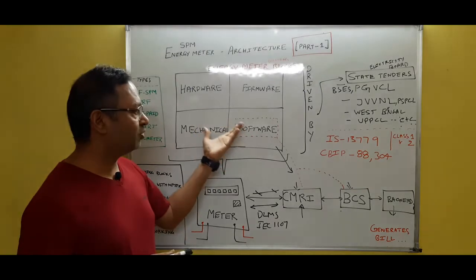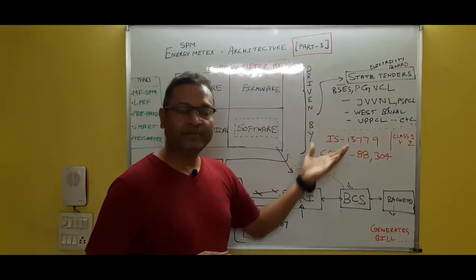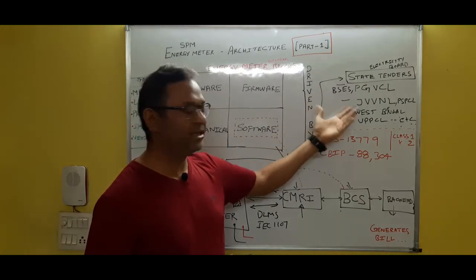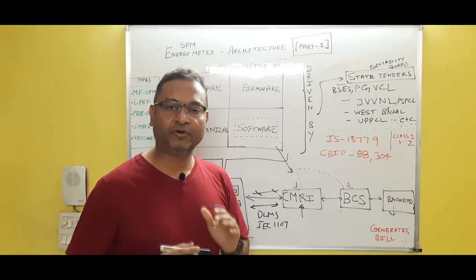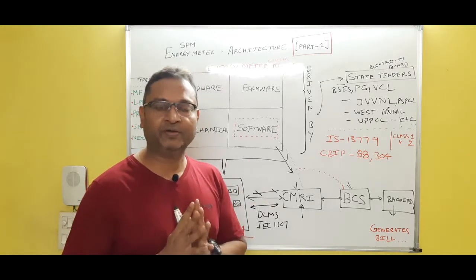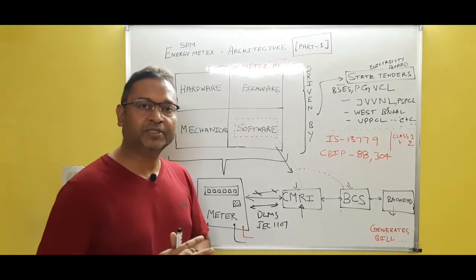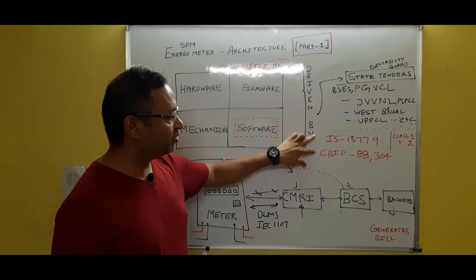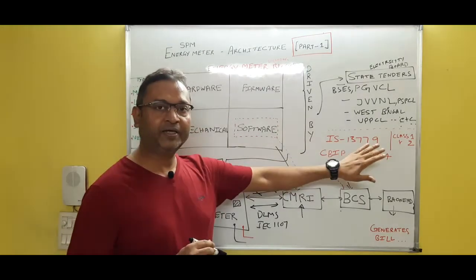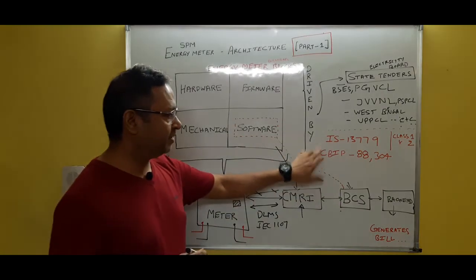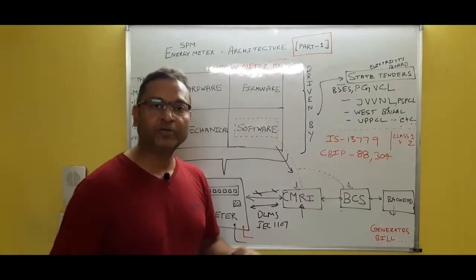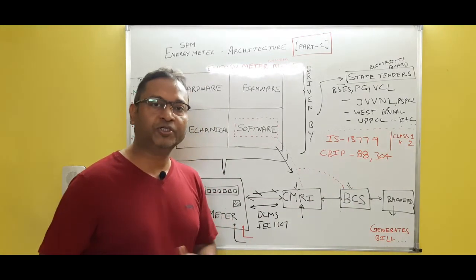So let's discuss about this. The overall design of all these four blocks is driven by our state tenders. State tenders I mean to say that there are a couple of names like BSES tender, PGVCL like Gujarat, and JVVNL, etc. For example, West Bengal, UP tender, and etc. Here what I mean to say is that every state floats a tender, and as per that tender, your display parameters may be different, your mechanical casing may be different, your nameplate may be different. But a few things remain constant, which means that every tender says that you need to follow this particular specification IS 13779. This is for class 1 and class 2 meters and generally applied to your single phase meters. And there is one more body named as CBIP, and in this report number 88 and 304 have some particular technical specifications, and as per that, some features need to be implemented into the meter.